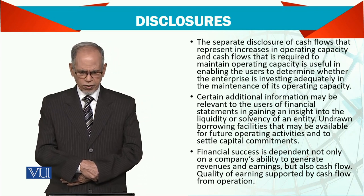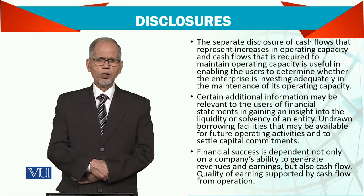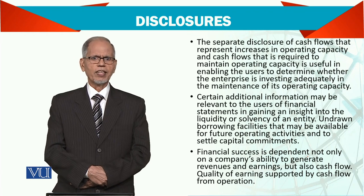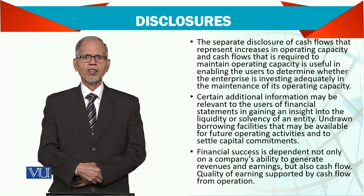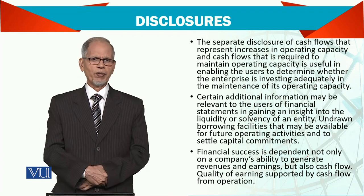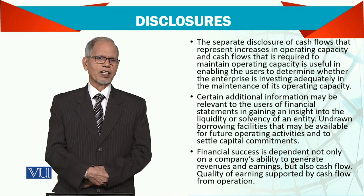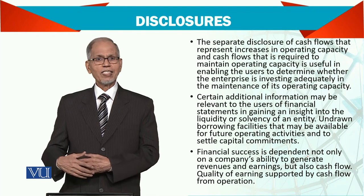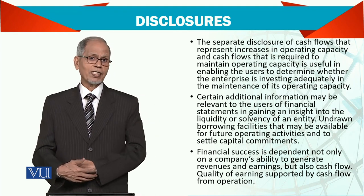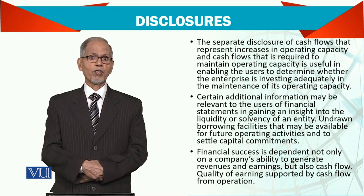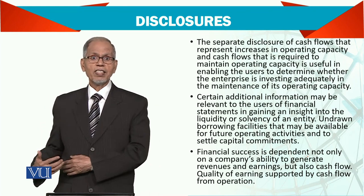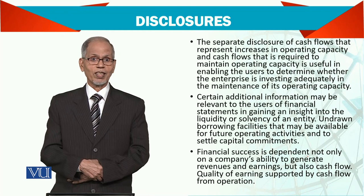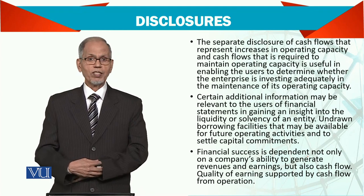Another important thing is undrawn borrowing facilities. Sometimes we arrange a credit line with the bank, which means the bank allows us to draw a certain amount of money during a particular period. Let's say they have given you a 100,000 credit line and you have used about 50% of it — so 50% is still available. We must mention this so that people know there is still money in the bank which they can draw, though they have not drawn it yet.